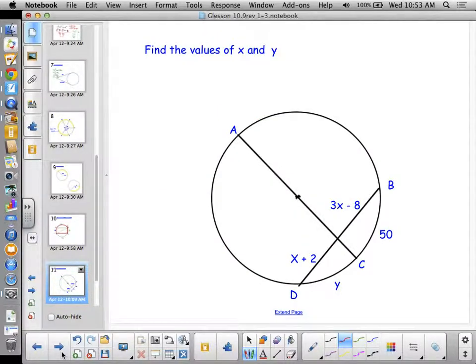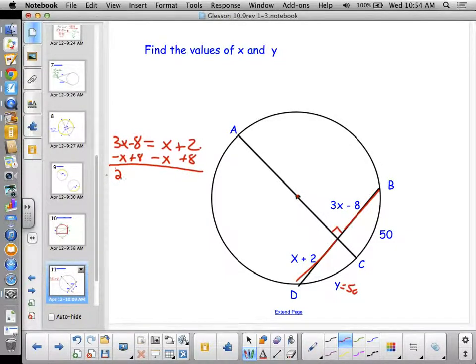Find the values of X and Y. All right. This is a diameter. That's a right angle. I'll give you that. Okay. So what do we know about a diameter? When it forms a right angle with a chord, what's true about these two arcs? They have to be congruent. What's true about these two segments? They also have to be congruent. 3X minus 8 has to equal X plus 2, which, again, relatively easy. But show your work so you don't make silly mistakes. And we can solve that.